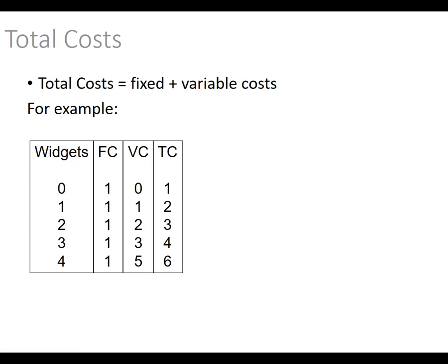For those with an accounting background, you'll like this — we just sum it up. If we're making zero widgets, fixed cost is 1, variable cost is 0, total cost is 1. One widget: fixed cost 1 plus variable cost 1 equals 2. It's always going to be the same fixed cost; we just add fixed costs to variable costs to get total costs.